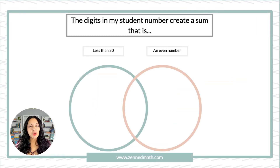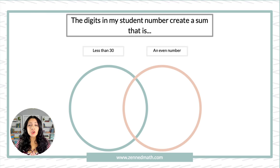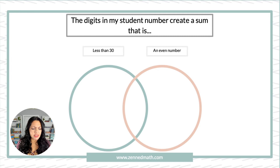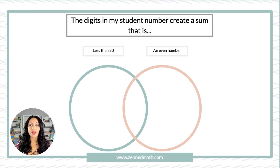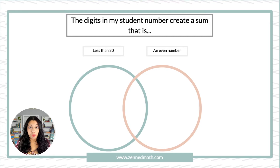Then we add an extra piece — the double loop Venn diagram is so good for collecting data. I still have the same prompt as before, but now I added a second piece: is their student number sum less than 30, or an even number, or both? Because that's the middle of the Venn diagram.